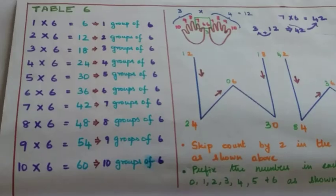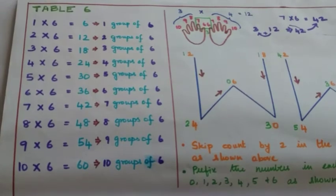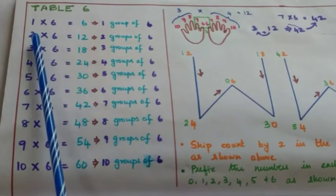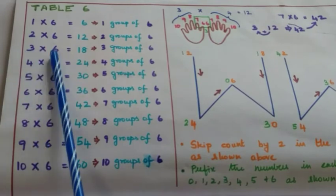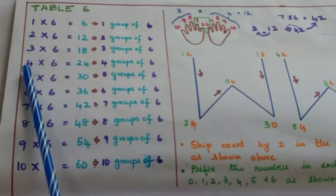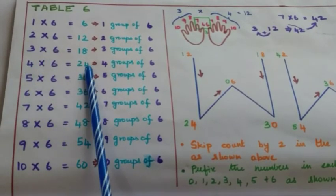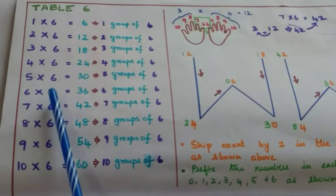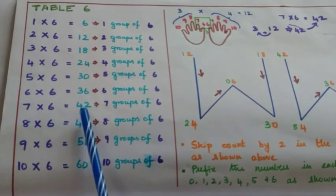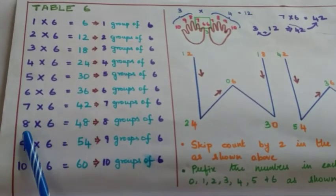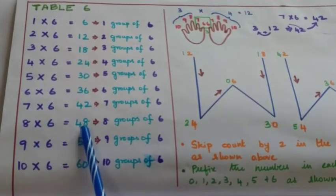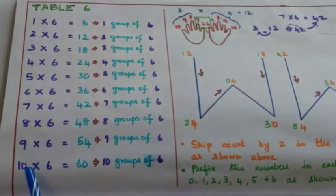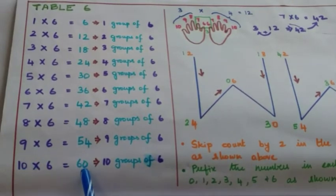Let's first see how table 6 needs to be read. 1 six is 6, 2 sixes are 12, 3 sixes are 18, 4 sixes are 24, 5 sixes are 30, 6 sixes are 36, 7 sixes are 42, 8 sixes are 48, 9 sixes are 54 and 10 sixes are 60.